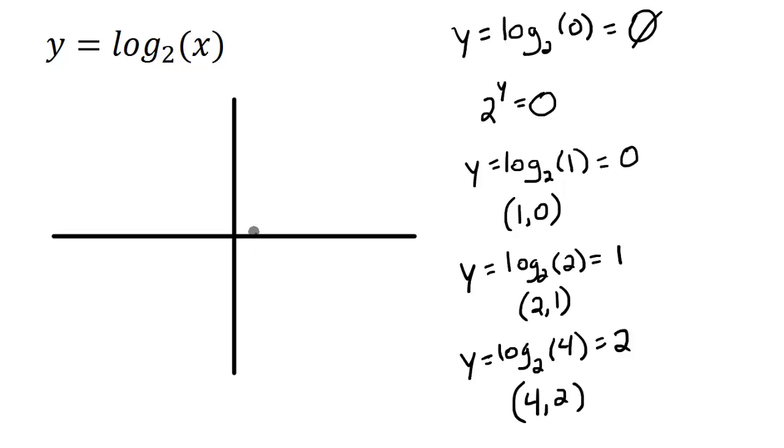So I'm going to plot these. 1, 0 will be right there. 2, 1 will be about right here. And then 4, 2 will be about right here. And if I connect those and make my curve, I'll get my log function.